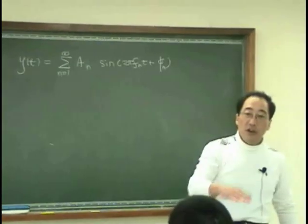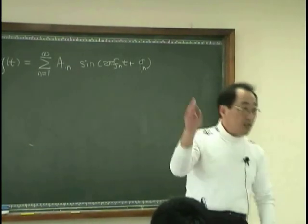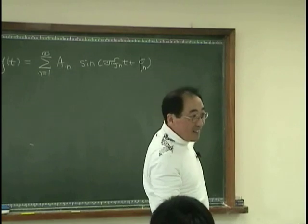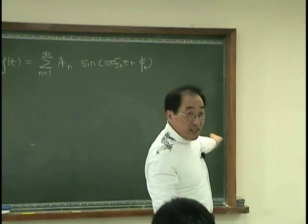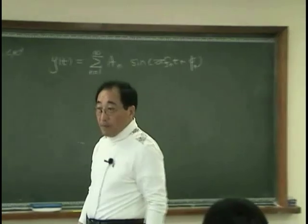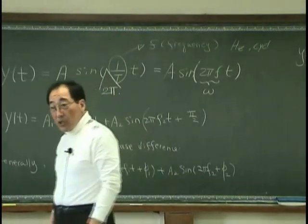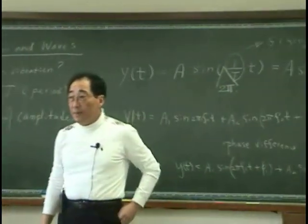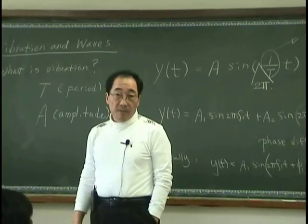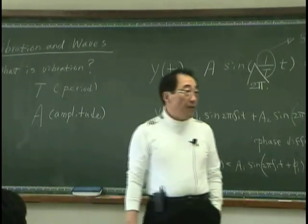Everything can be expressed by a n sine 2 pi f n t plus phi n, and our job is determining a n, phi n, f n.